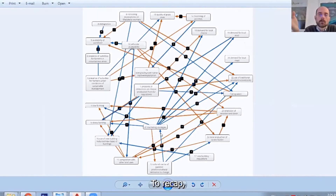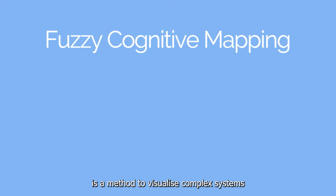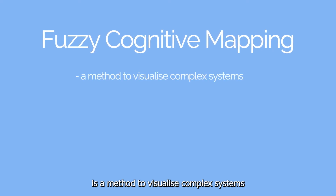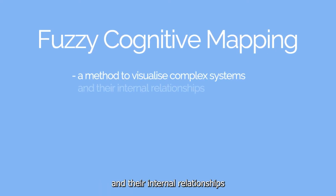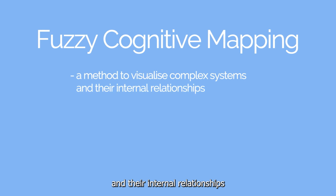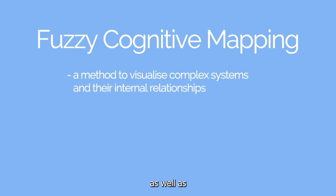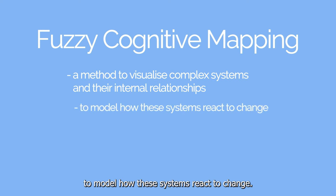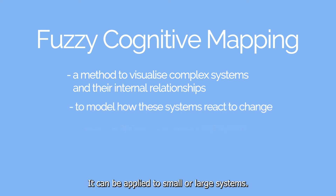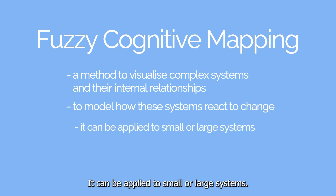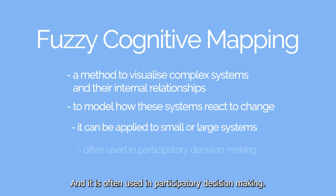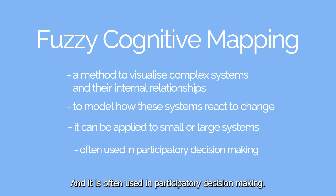To recap, fuzzy cognitive mapping is a method to visualize complex systems and their internal relationships, as well as to model how these systems react to change. It can be applied to small or large systems, and it is often used in participatory decision-making.